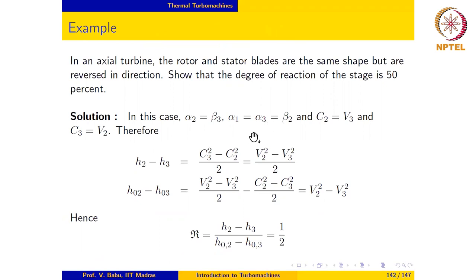Now if you construct a velocity triangle with this information for an axial rotor, it should be very easy to show that C2 equals V3 and C3 equals V2 in this case. I urge the student to actually go through this construction and convince themselves of this fact.